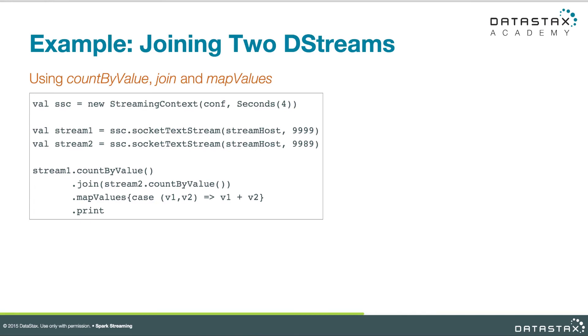There are any number of other reasons why you might need to go to separate sources. In trivial examples it's fine to have a single firehose with all the data, but in the real world you might have to do something like this. The code is frankly pretty simple — we'll create a streaming context, create the two streams as text streams from the same host on different ports in this example, count each one by value, then join the second stream also counted by value. That joined stream we will map values, adding them together — effectively reducing the tuple into a single scalar value — and finally print the result.